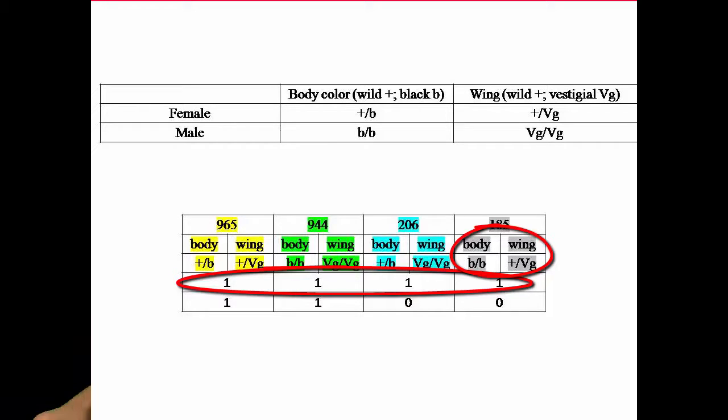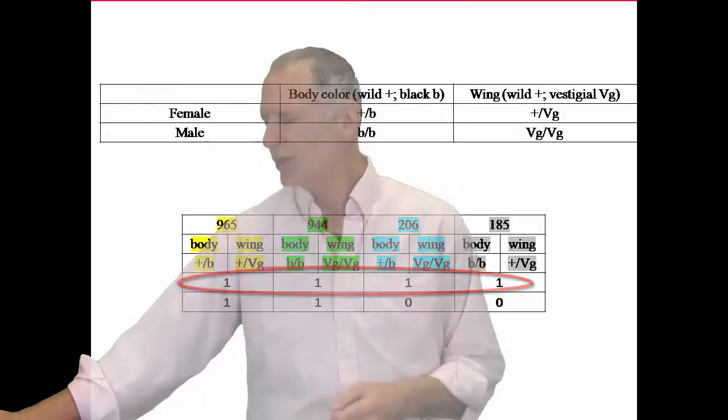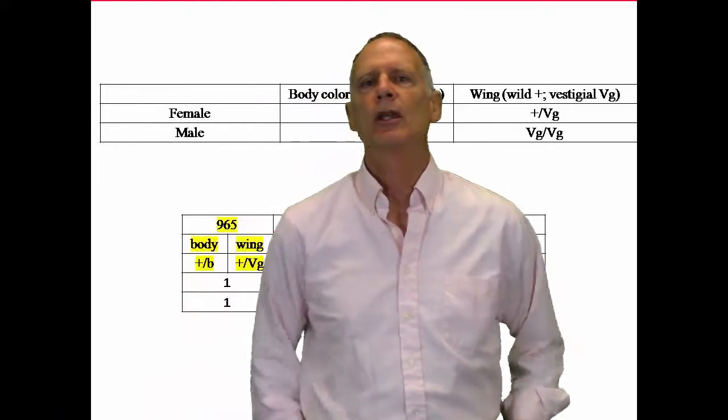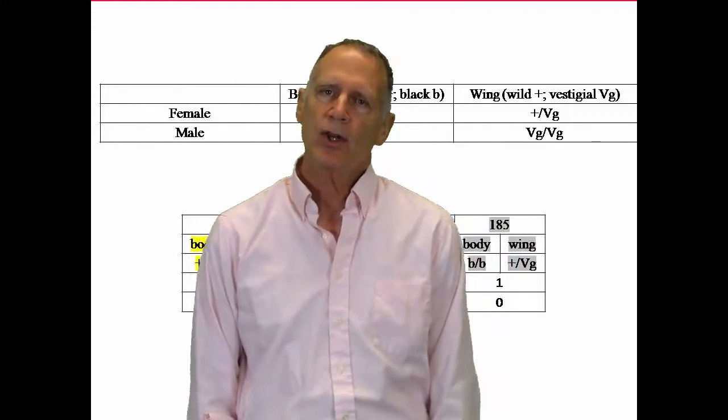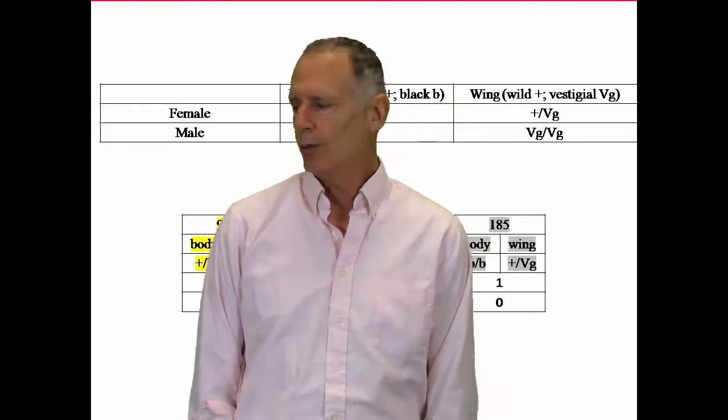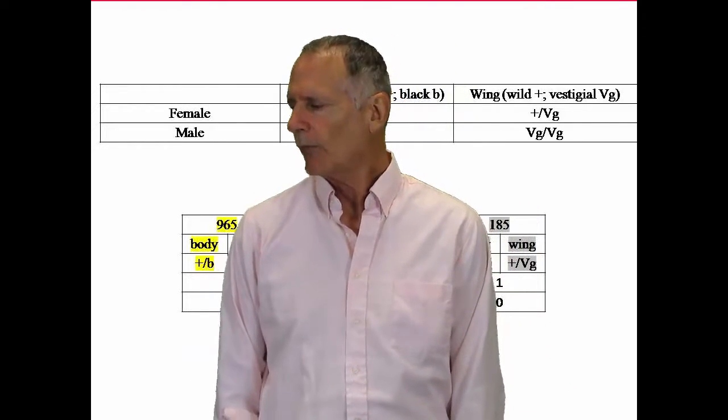You should be getting, if they're on the same chromosome. But he does get some, but he doesn't get it in the ratio that he should expect if they were on separate chromosomes, which would be one to one to one to one. I hope that's clear.